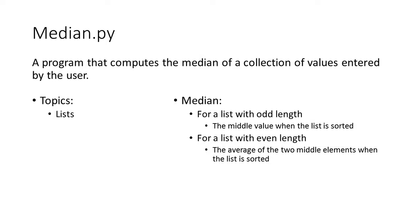In this video, I'm going to demonstrate how a list can be used to compute the median of a collection of values. If the collection contains an odd number of values, then the median is the middle value when the collection is sorted. When the collection contains an even number of values, the median value is the average of the two middle values.